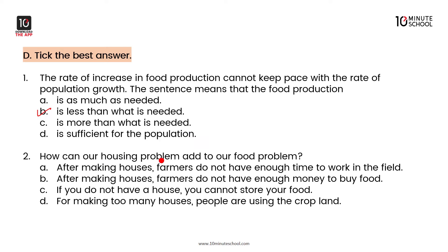How can our housing problem add to our food problem? For making too many houses, people are using the crop land. Because the land used for housing is the same land that could be used for crops, our answer is D.